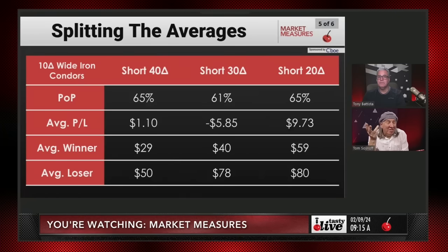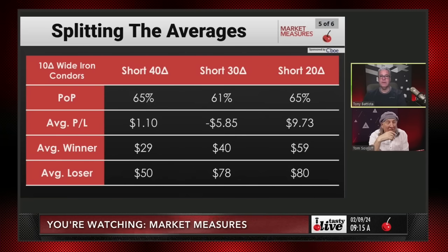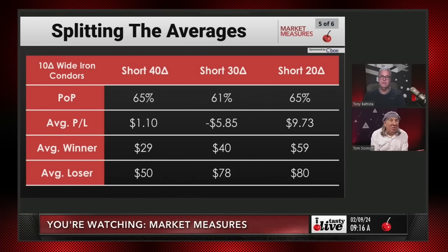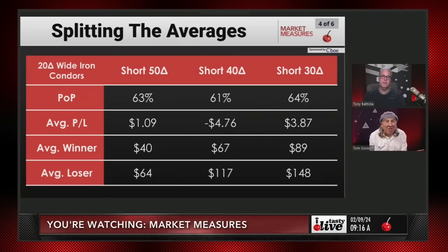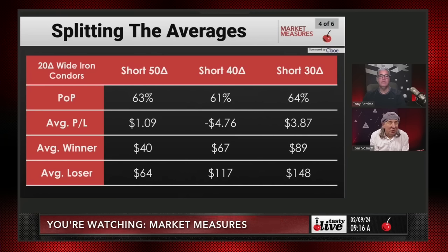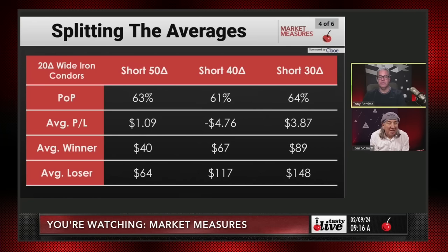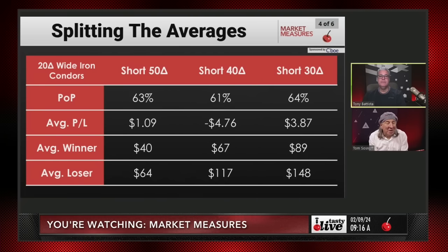This is selling the 20 delta call and put and buying something that's 10 deltas away — a wide iron condor. It's made good money, but it's not as good as the previous slide. You make a little less money, which must be because some of the losers over that 15-year period were bigger — full losers because it's $20 wide — and they took down the winners. But when you look at these slides, if you're doing iron condors on the SPY, you want to go to the 20 delta and do it 10 deltas wide. That's your best results over 15 years.